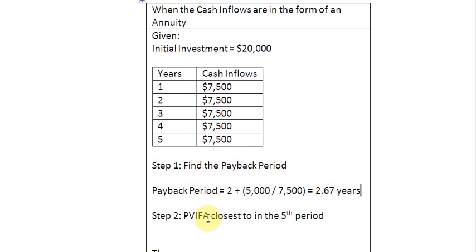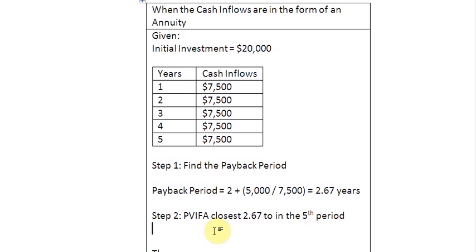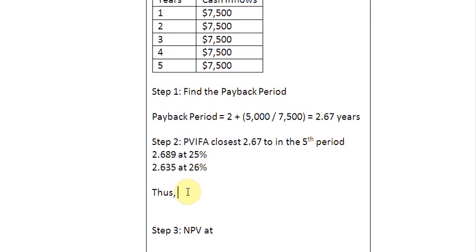In step two, we locate the present value interest factor of the annuity closest to 2.67. We look into the row for the fifth period, because we have five years in question. From the tables, we find a factor of 2.689 with a corresponding interest rate of 25%, and another factor of 2.635 corresponding to 26%. Therefore, we can conclude that our internal rate of return is between 25% and 26%.